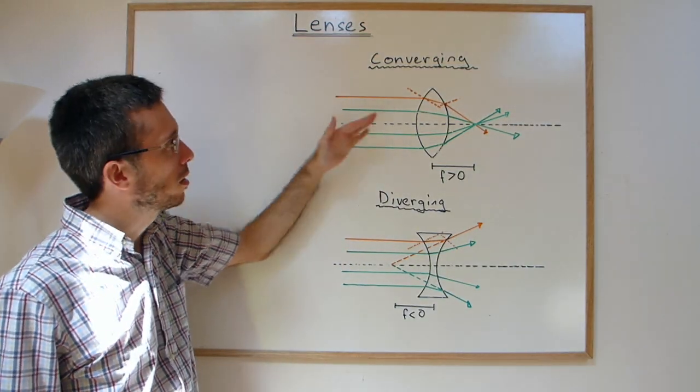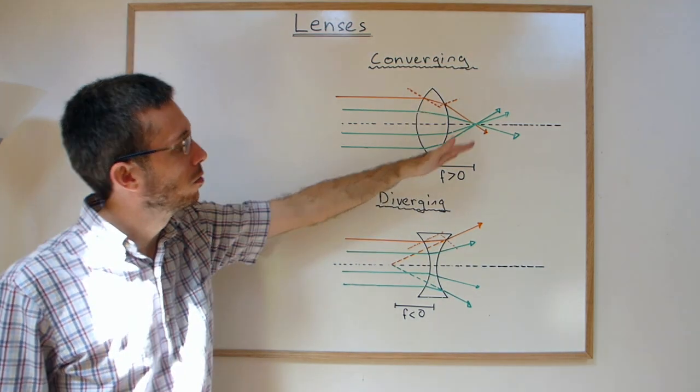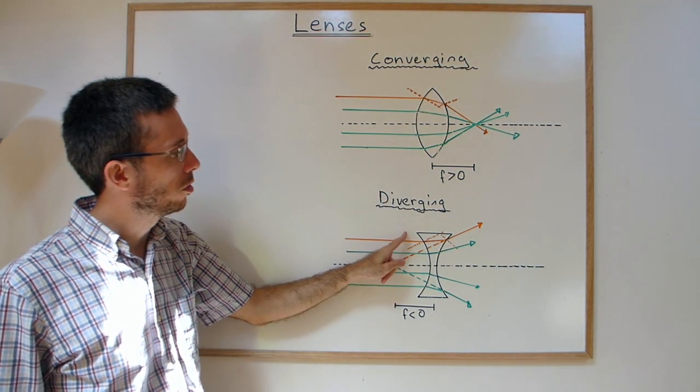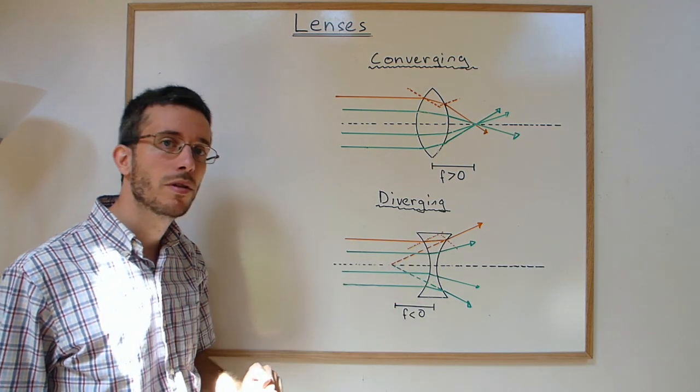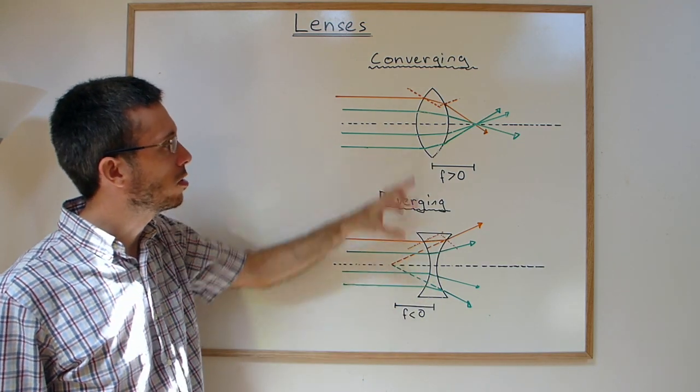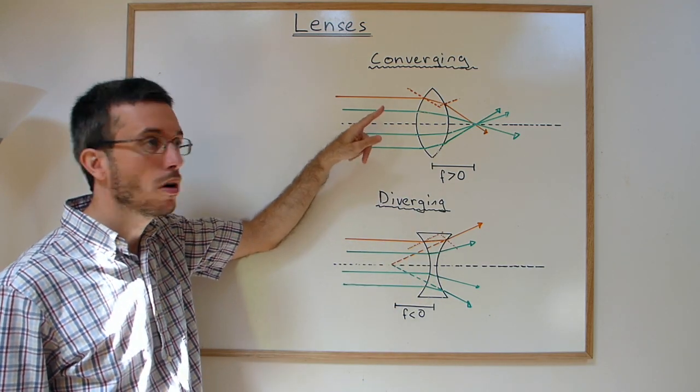For a converging lens, it's kind of bowed outward, while for the diverging lens, it's shaped the other way. This is a bit extreme - it doesn't have to be this extreme to work.